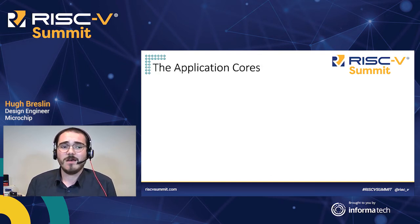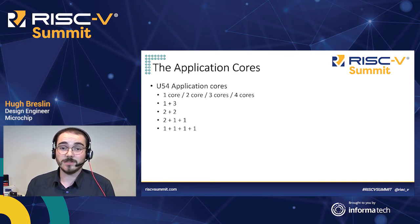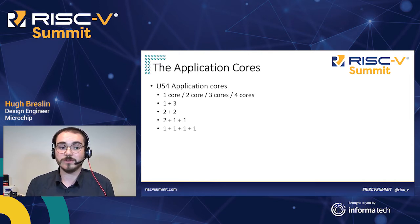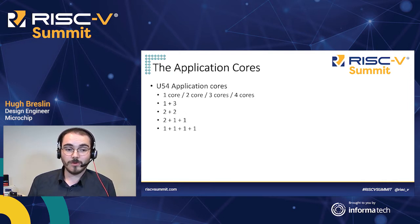Let's look at the cores in more detail, starting with the application cores — the U54 harts. We have four U54 cores, and you don't have to use them all at once. You can use several different configurations: target a single application core, two, three, or all four. Another use case could be a one-plus-three situation where a single application, such as a crypto application, runs on one core while Linux runs on the other three. You could also do two-plus-two, or four individual applications running across four distinct harts.